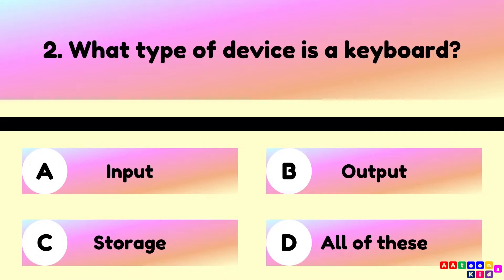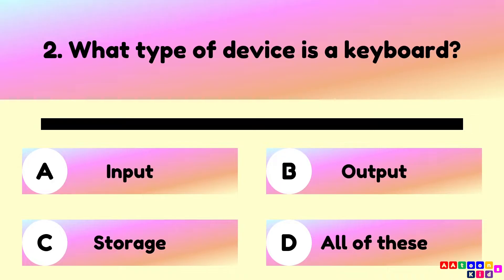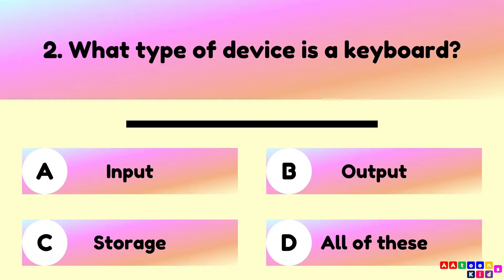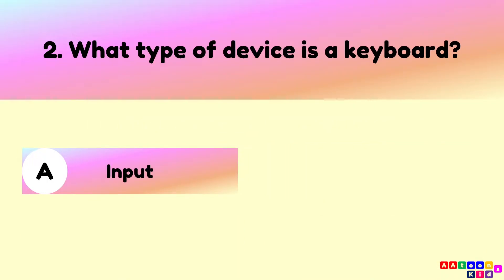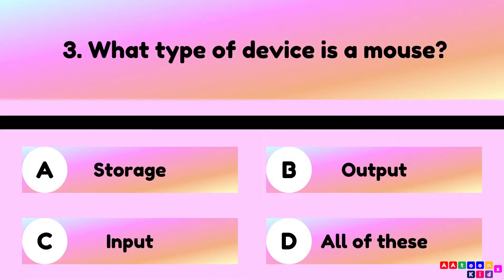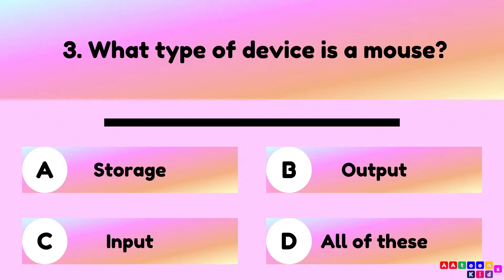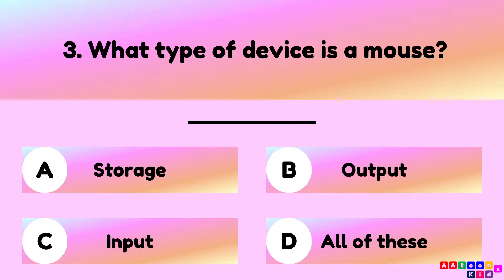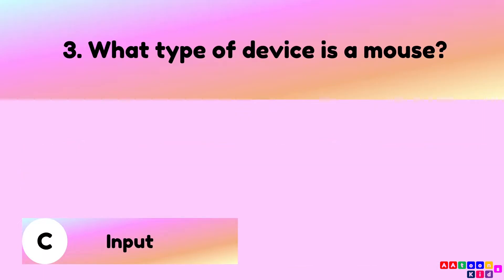What type of device is a keyboard? A keyboard is an input device. What type of device is a mouse? A mouse is an input device.